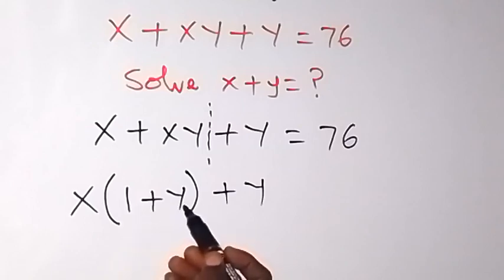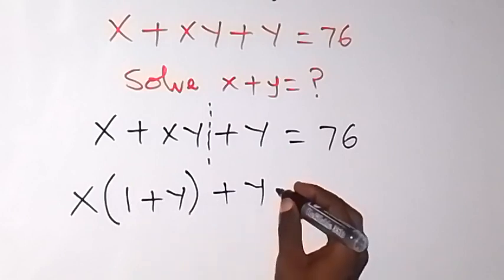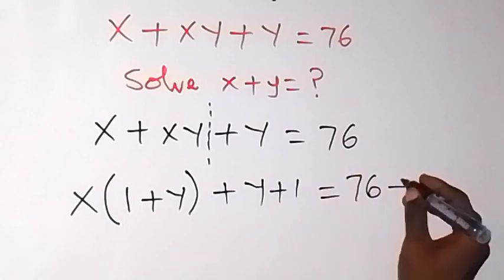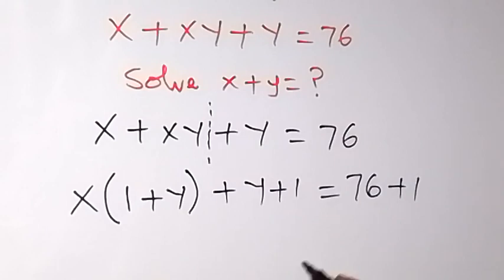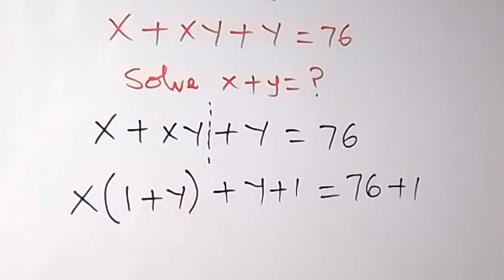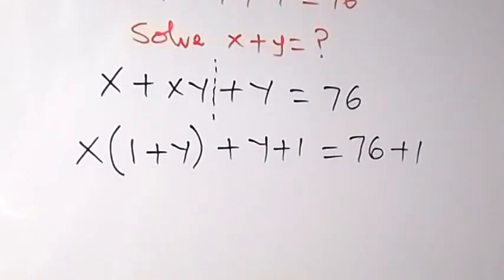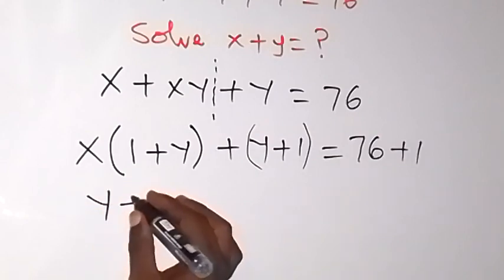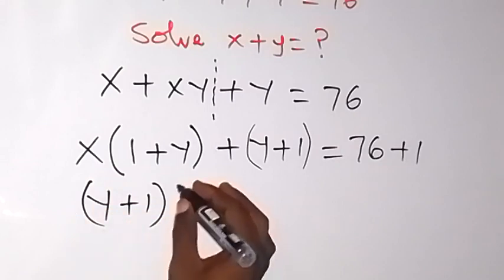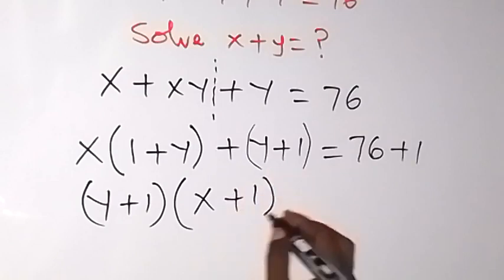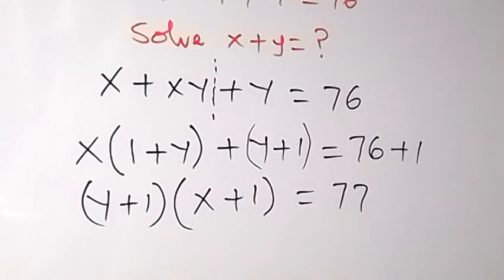We have x times (1 plus y) plus y. We want to get a term of the form (y plus 1), so we add 1 to both sides. Adding 1 on the left allows us to factor out (y plus 1), giving us (x plus 1)(y plus 1) equals 77.